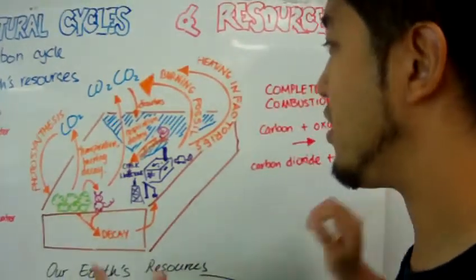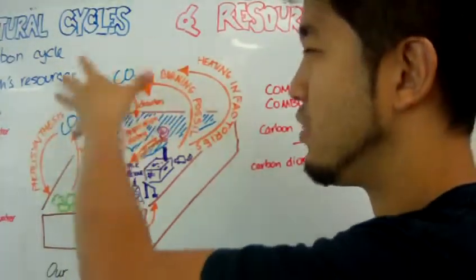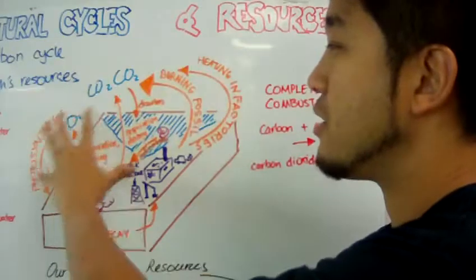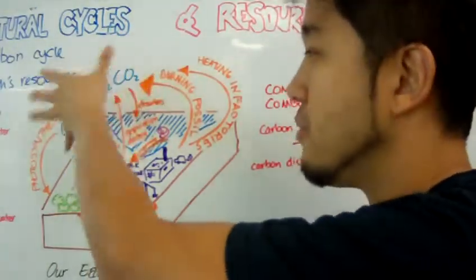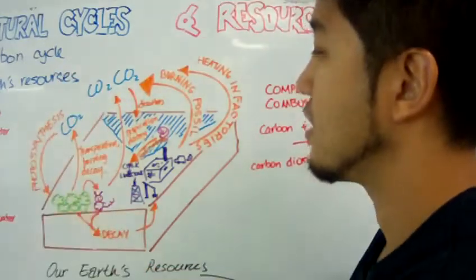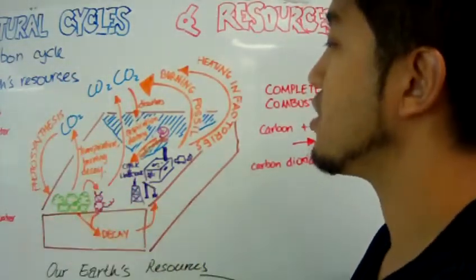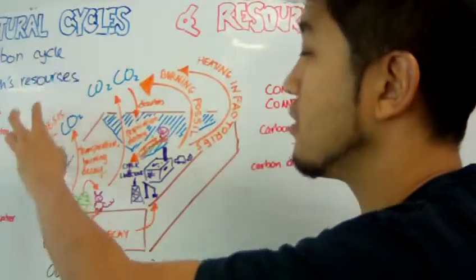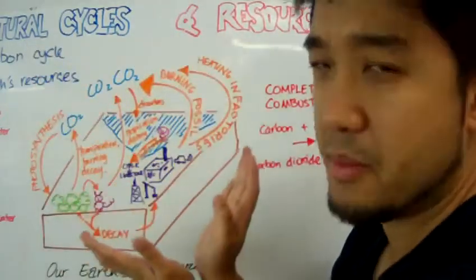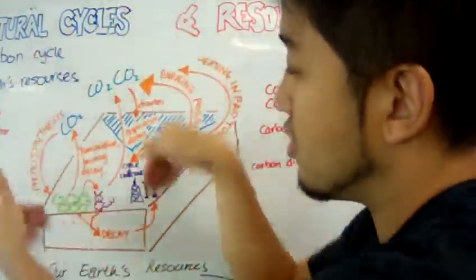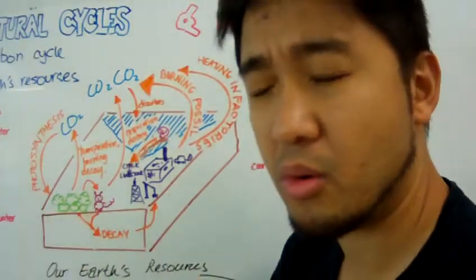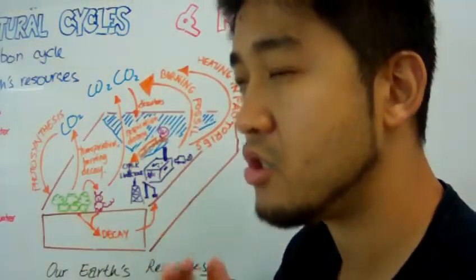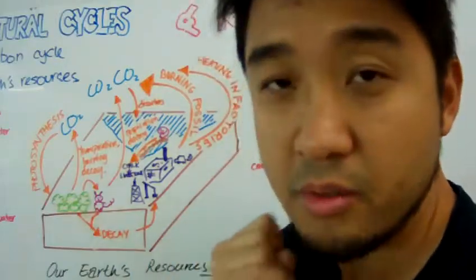When we release all this carbon dioxide back into the atmosphere, nothing is absorbing it. We have limited amounts of vegetation to absorb this carbon dioxide. As you can see, most of the CO2 in the carbon cycle goes this way, very little goes down here.